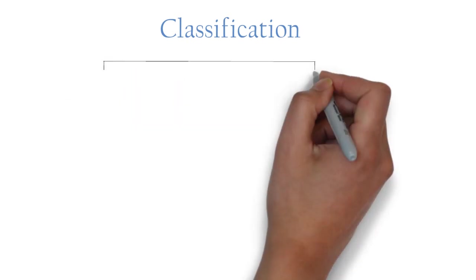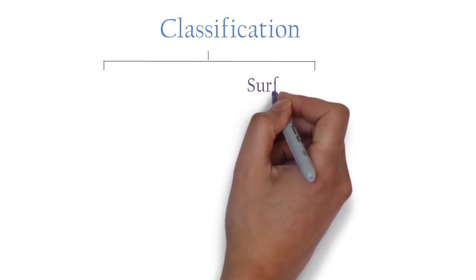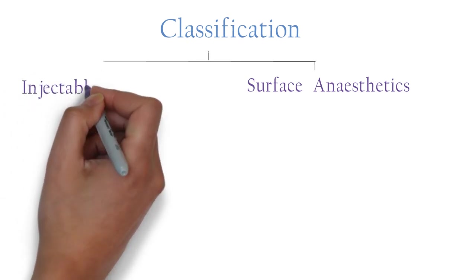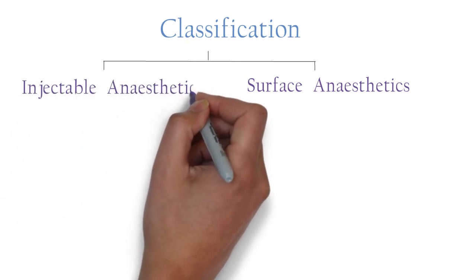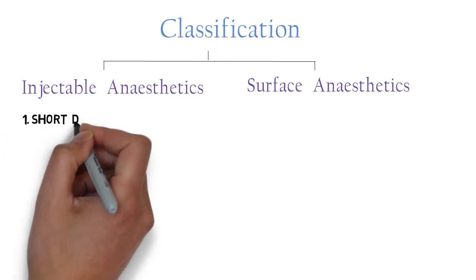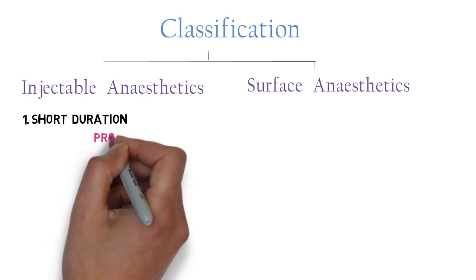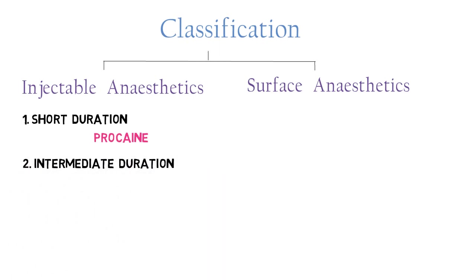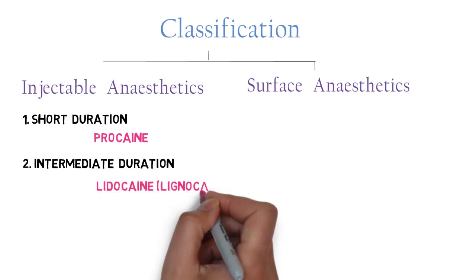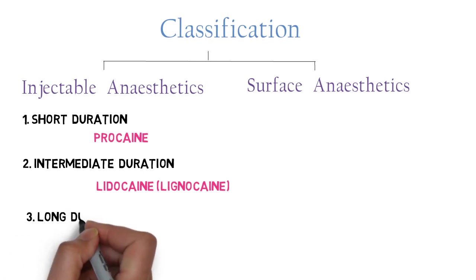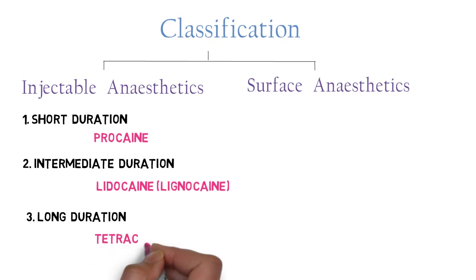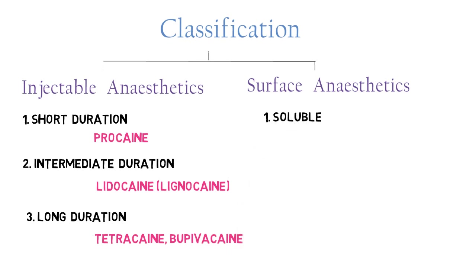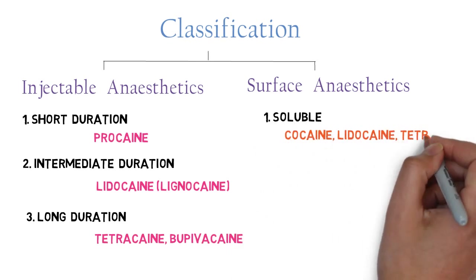These drugs are divided into two broad categories: surface anesthetics and injectable anesthetics. Injectable anesthetics are further divided into three categories based on duration of action. First, short duration — low potency drugs, example procaine. Second, intermediate duration — intermediate potency, example lidocaine (also called lignocaine). Third, long duration — high potency drugs, example tetracaine and bupivacaine.